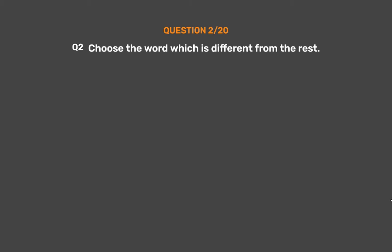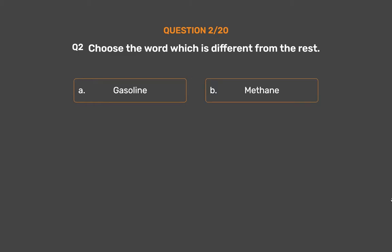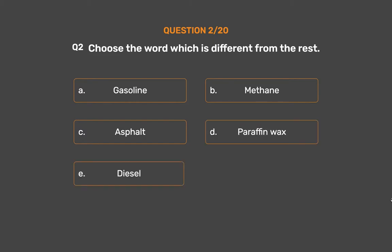Question number 2. Choose the word which is different from the rest. Option A: Gasoline. Option B: Methane. Option C: Asphalt. Option D: Paraffin wax. Option E: Diesel.